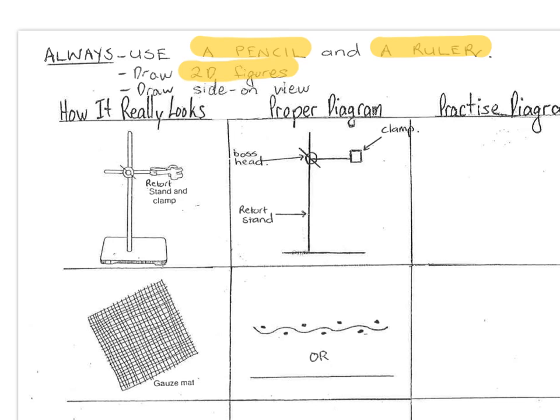By the way, you will probably see occasionally different versions of proper diagrams, and that's perfectly okay. So long as they resemble the apparatus they're meant to look like, provided they're done using a ruler, they've been drawn in pencil, they're 2D.